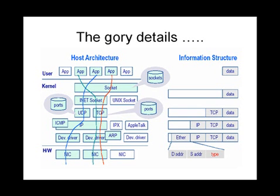Now let's look into this in a little more detail — it's the same example but with more detail. Summarizing what we talked about in the previous slide: this is our network interface card; we could have multiple cards if installed. Looking at the middle card, the lines represent the route a packet takes, and at every layer we can see that something is being stripped as the data goes up. This is the host architecture and the information structure of the packet as it is being pushed up.